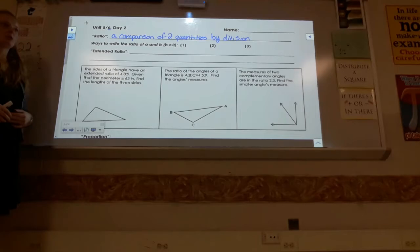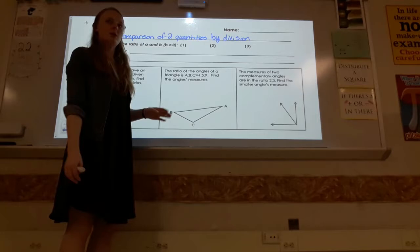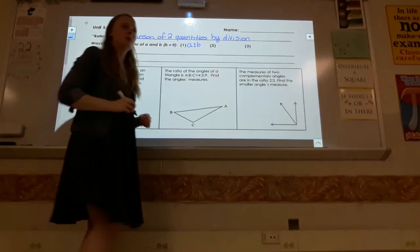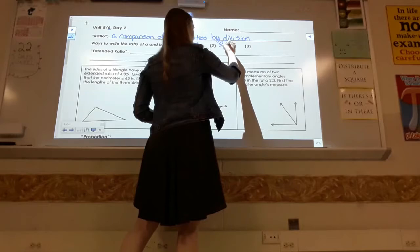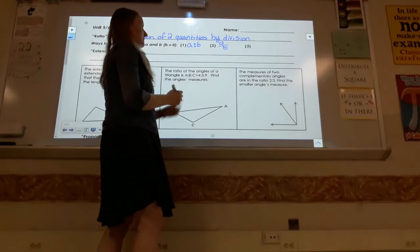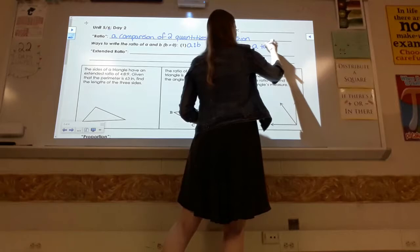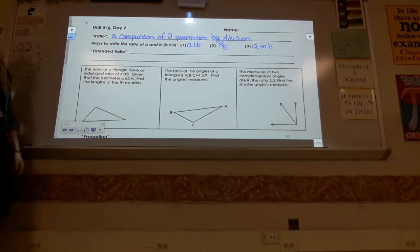There are a couple different ways to present a ratio using notation. We can write A colon B — that's one way. Another way is A over B as a fraction. And a third way is using the word 'to,' so A to B. That's the colon idea but using words instead of symbols. These are three different ways to represent a ratio.